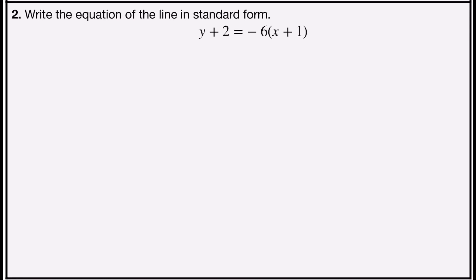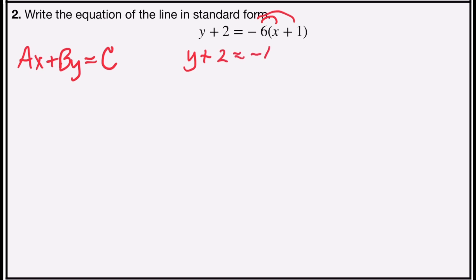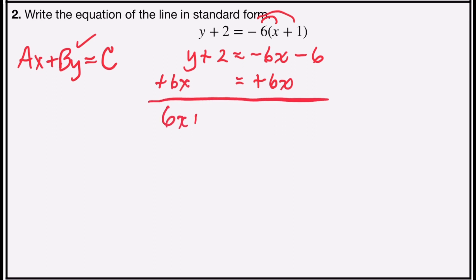Problem number 2 asks you to write the equation of the line in standard form. I have y plus 2 equals negative 6 times x plus 1, in point-slope form. In standard form, ax plus by equals c, where a, b, and c are integers and a has to be positive — no fractions, no decimals. Starting with the distributive property on the right-hand side: negative 6 times x is negative 6x, and negative 6 times 1 is negative 6. My y term is on the left side, but my x term is on the right, so I'm going to add 6x to both sides, giving me 6x plus y plus 2 on the left, and negative 6 on the right.